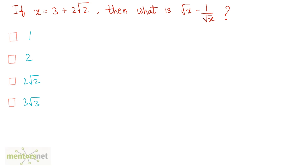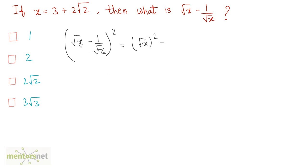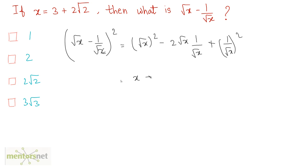If we square the complete term — writing (root x minus 1 by root x) whole squared — we may get rid of the root sign. Using the formula (a minus b) squared equals a squared minus 2ab plus b squared, this becomes root x squared minus 2 times root x times 1 by root x plus 1 by root x squared, which simplifies to x minus 2 plus 1 by x.